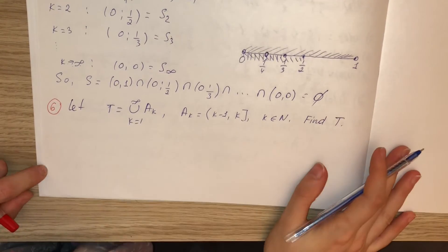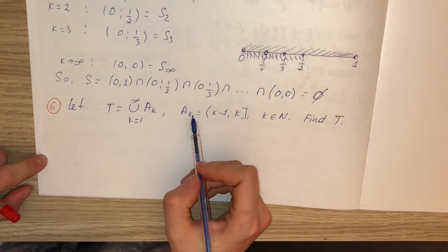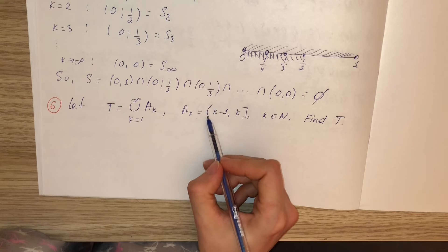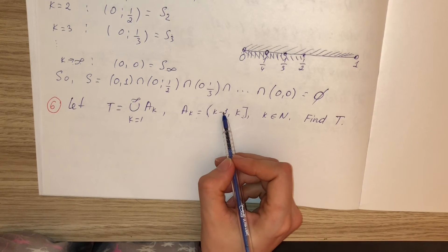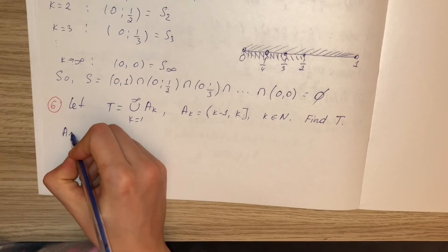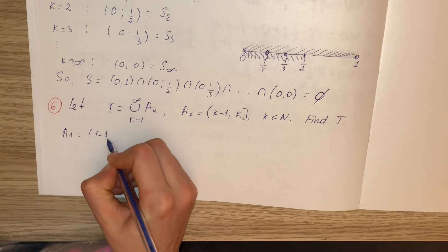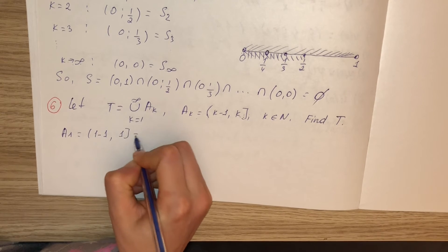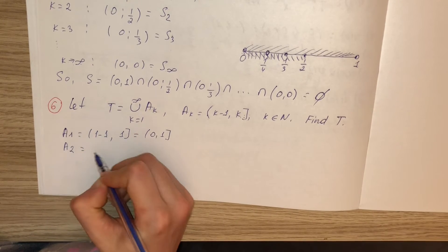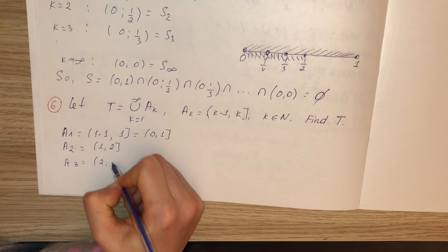Our next exercise: let T be the union of sets Aₖ, where Aₖ is the half-open interval (k−1, k]. For k = 1: (0, 1]. For k = 2: (1, 2]. For k = 3: (2, 3]. It keeps going.